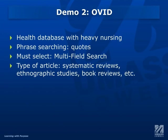You can limit to a subset of journal types — specifically nursing — but you can also limit to a specific type of article. In Ovid, peer-reviewed research is called original research, and systematic reviews are called review articles. Those terms are different from CINAHL, so be aware of the language. You can also limit to things like book reviews or opinion pieces if that's what you're looking for.